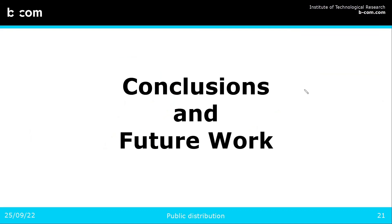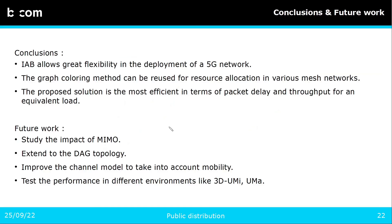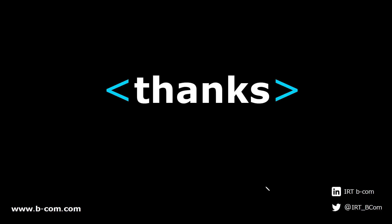To conclude, we see that IAB allows great flexibility in the deployment of 5G networks, and the graph coloring method presented here could also be reused in other mesh networks. Our proposed solution is the most efficient one in terms of packet delay and throughput for an equivalent load. For future work, we will study the impact of MIMO on the equipments, extend the solution to DAG topology, improve the channel model to account for mobility of IAB nodes and UEs, and test performance in different environments like 3D urban micro and urban macro. Thanks for watching.